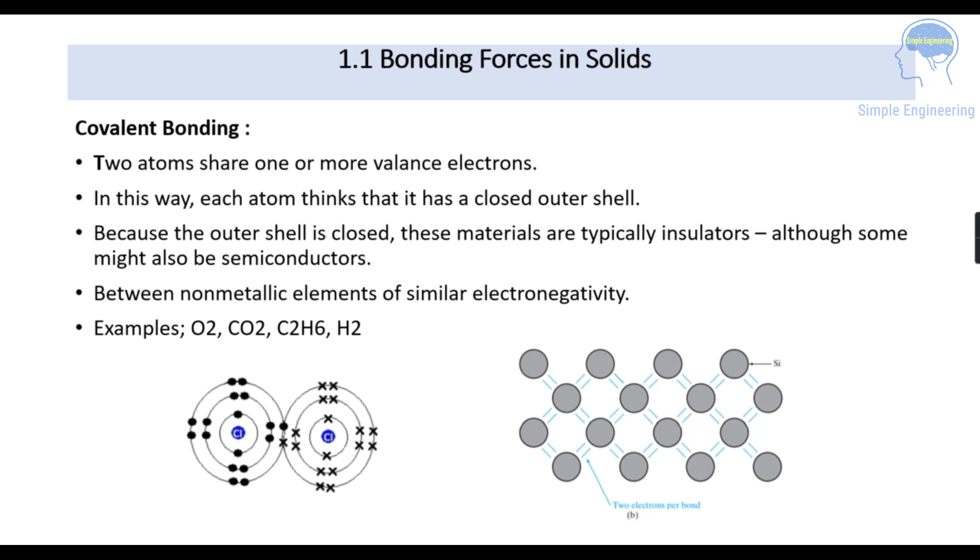Next is covalent bonding. Two atoms share one or more valence electrons. In this way each atom thinks that it has a closed outer shell. Because the outer shell is closed, these materials are typically insulators, although some might also be semiconductors. Between non-metallic elements of similar electronegativity.